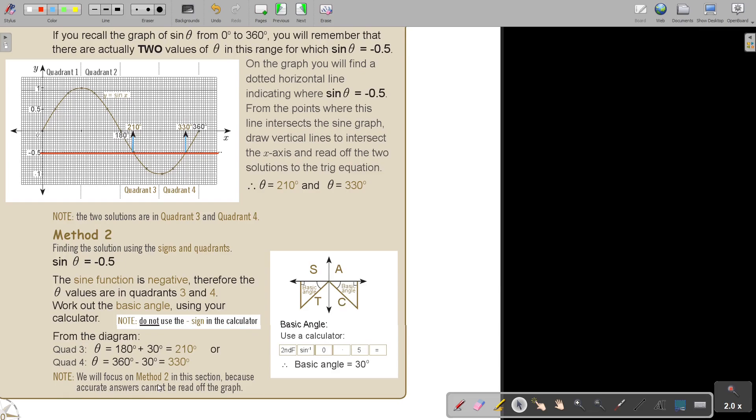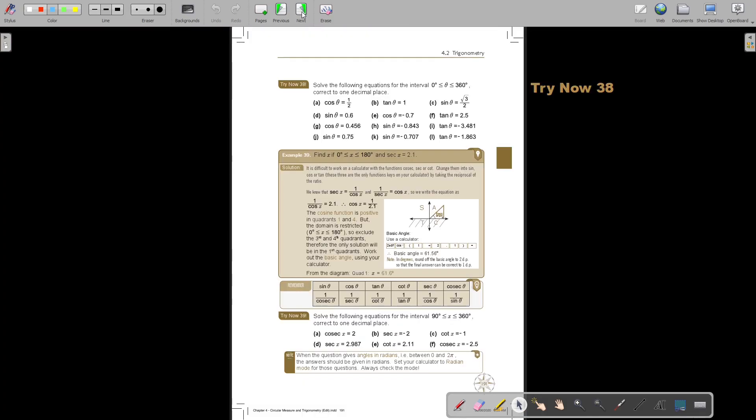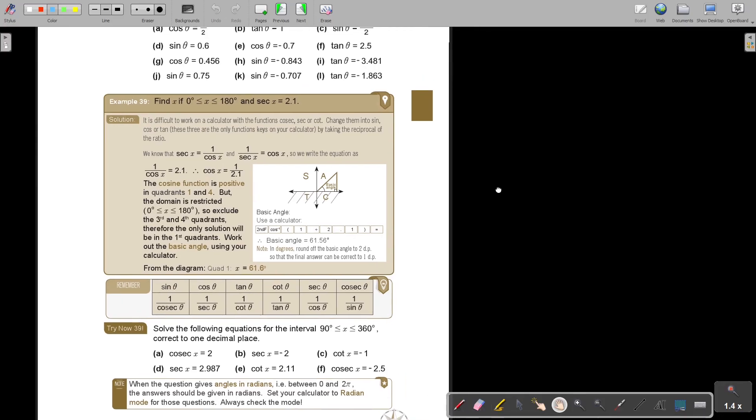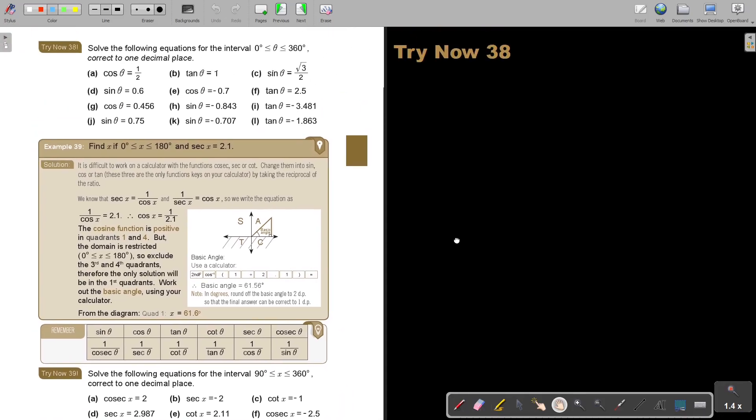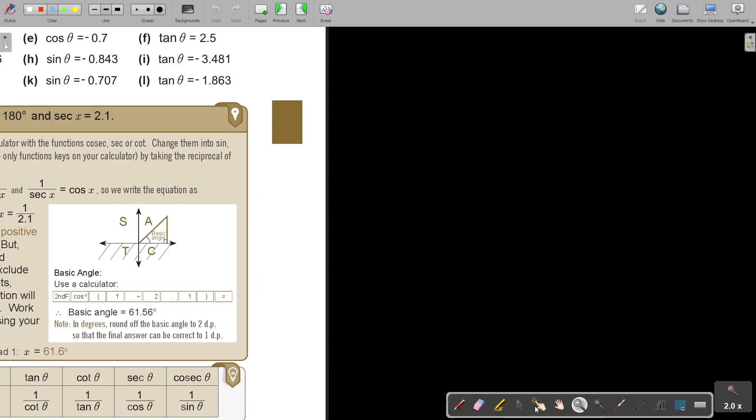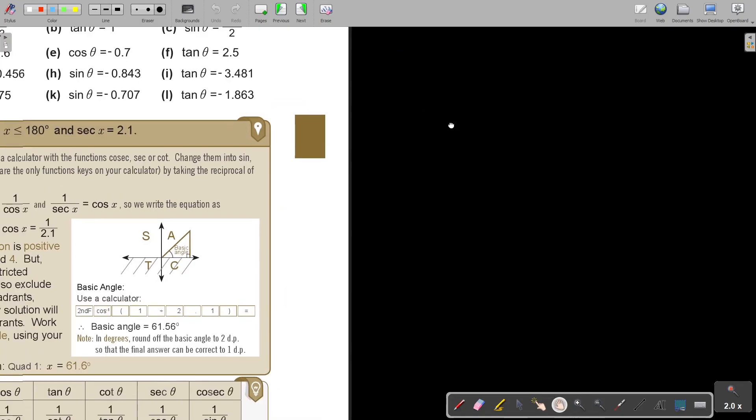Note, we will focus on method two in this section because accurate answers cannot be read off the graph. So it's more accurate if we do it on this method. You can just do method two.